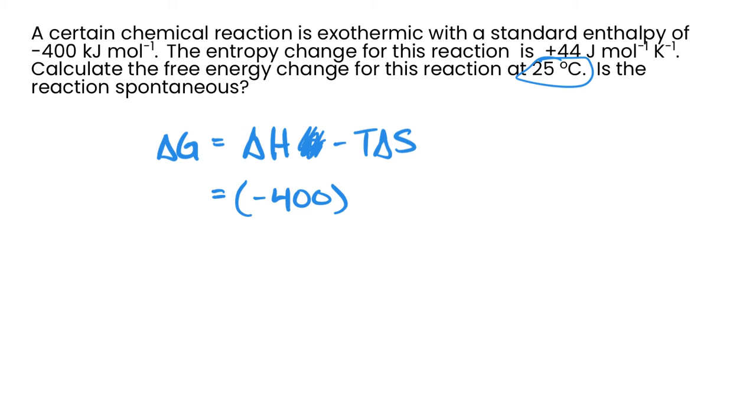And we're going to subtract. Now the temperature needs to be in Kelvin, so we add 273 to this to get 298. And then our entropy change is 44, but it's in joules per mole per Kelvin, so we're going to need to divide that value by 1000 to get it in kilojoules as well. Okay, really important this step. Don't forget that.